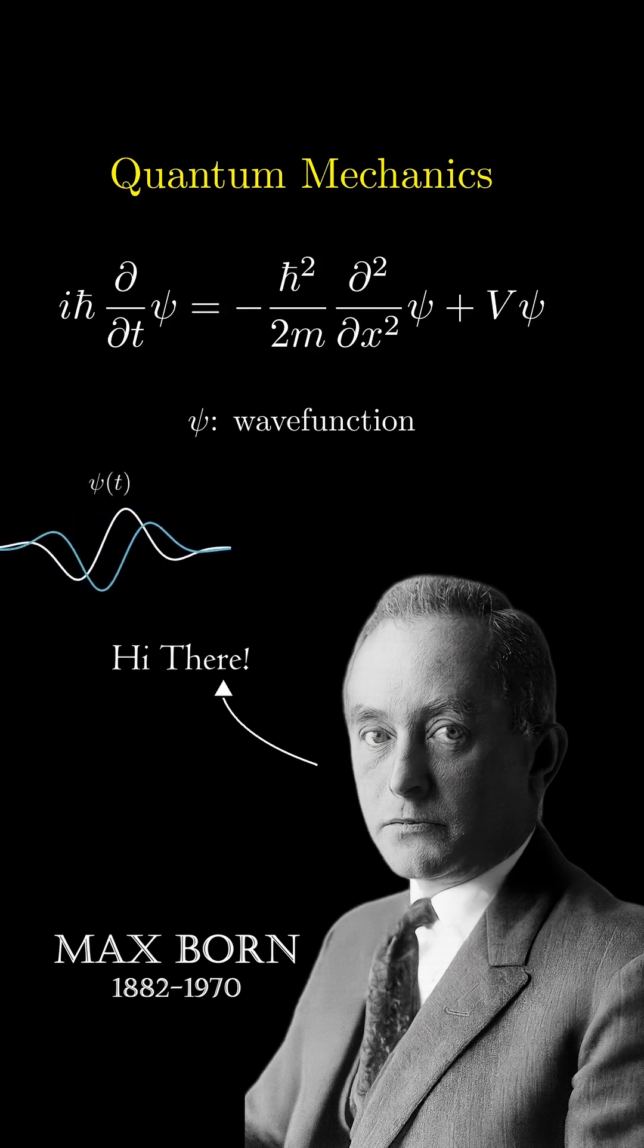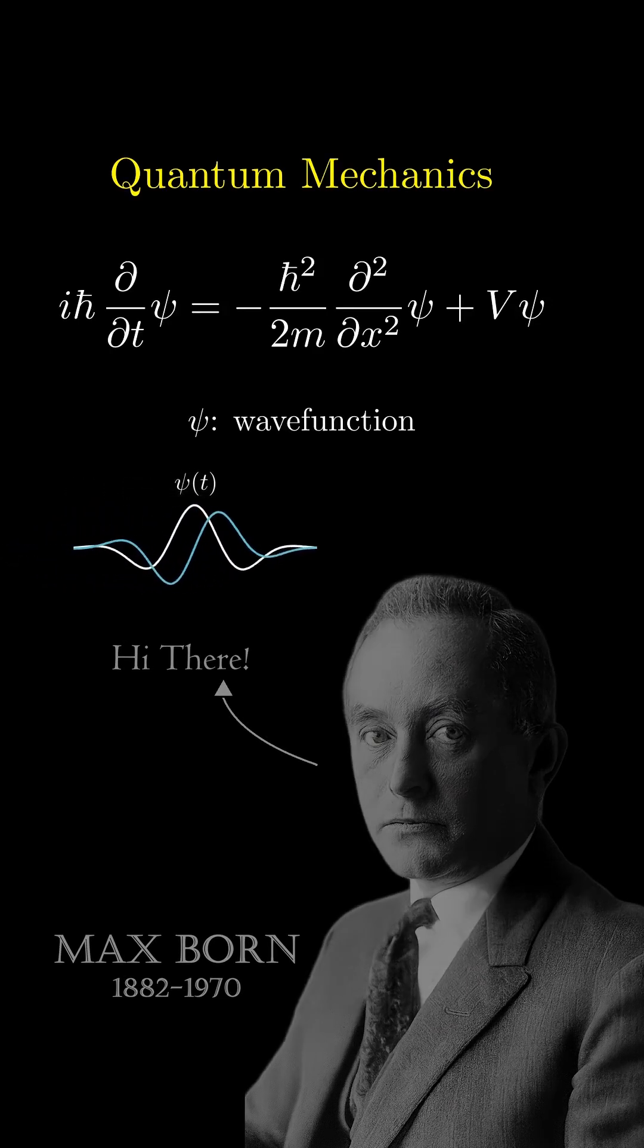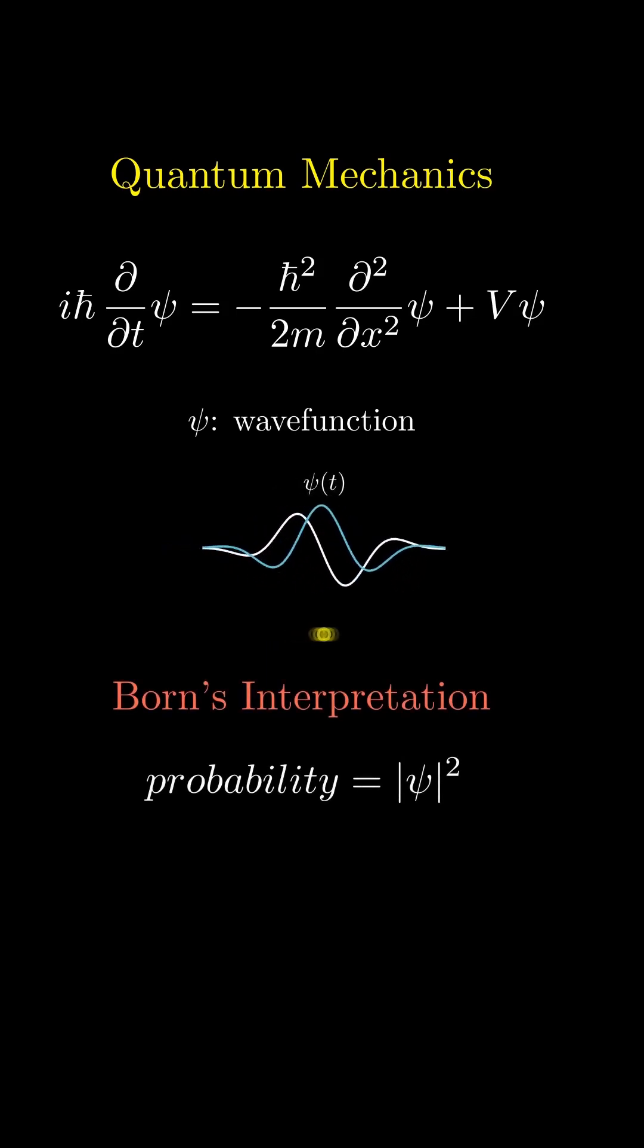One of them was provided by Max Born. The Schrödinger equation simply tells us how the wave function evolves with time. But it was Max Born who postulated that the wave function amplitude has something to do with the probability of the particle being found.